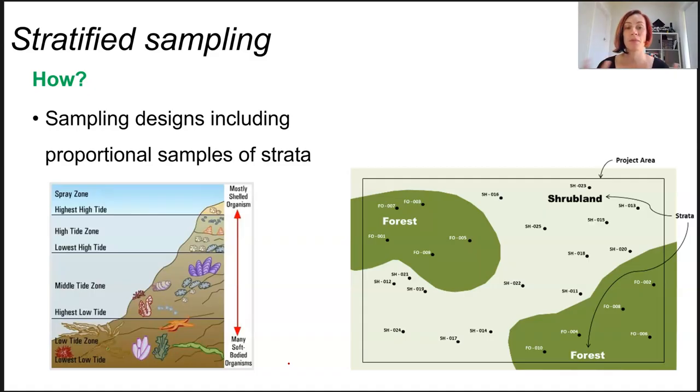There's no point taking 10 samples from each strata just to keep it nice and even if one of them is more predominant than the other. Strata can be spatial, existing in a physical space, horizontal zonation or vertical layers, like the forest we're talking about, or they can be temporal, existing over a period of time, like throughout different seasons or years.